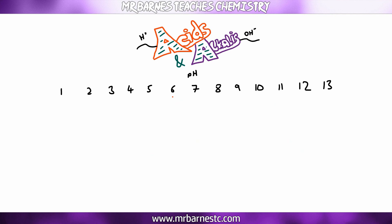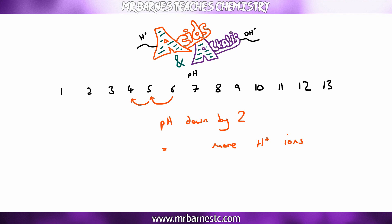In the exam they may ask: as the pH goes down by one, what happens to the concentration of H+ ions? The key thing is that every time the pH decreases by one, it becomes 10 times more concentrated — there are 10 times more H+ ions. If it goes down by 2, that's 10 × 10, so 100 times more H+ ions.